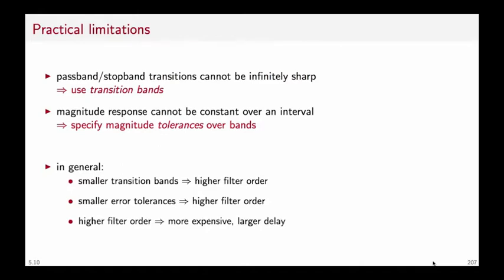The general lesson is this: if we want very small transition bands, we will need to use a filter of high order. Similarly, if we want small error tolerances, we need a high order filter. A high order means a high polynomial degree either at the numerator or at the denominator of the transfer function, which means we will need more computational power to implement the filter, and the delay introduced by the filter in a causal realization will be larger.